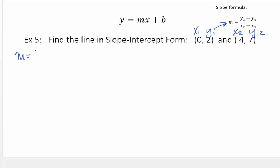So I'm going to have 7 minus 2, because that's y2 minus y1, over 4 minus 0, x2 minus x1. That gives me 5 over 4. All right, there's my slope. Now to find the line in slope-intercept form, I can pick either point. It doesn't matter. You will end up with the same solution.